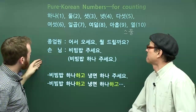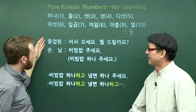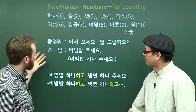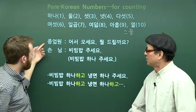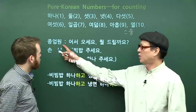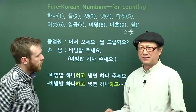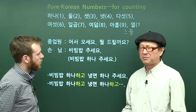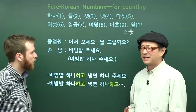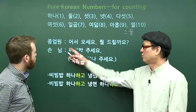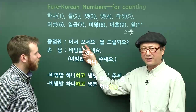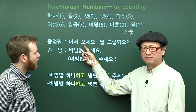We've got a little conversation here. In a restaurant, I would use these for ordering. Robert, what is going on in this dialogue? 종업원 is the person who works in a restaurant — a waiter or waitress. 종업원이 says: 어서 오세요. 어서 — 오 means to come.